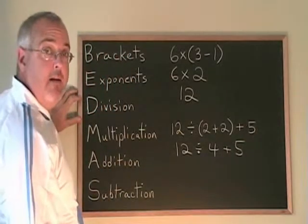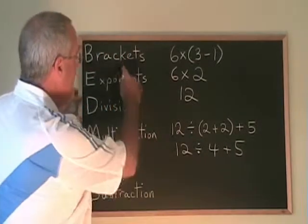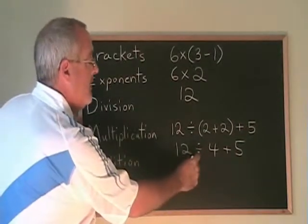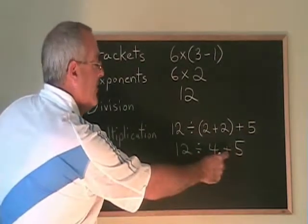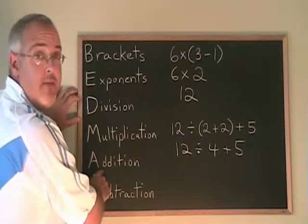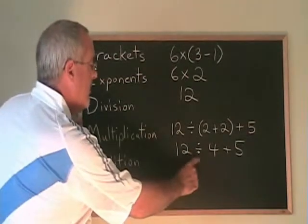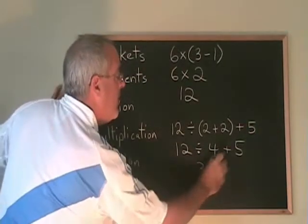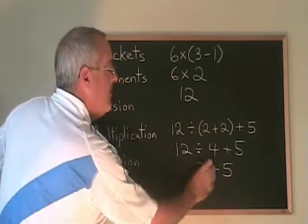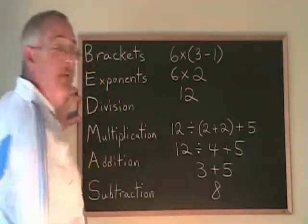Now, with no more brackets, we just have to apply the rest of the rules of BEDMAS. And we see divided by should be done before addition. 12 divided by 4 is 3. We copy down the plus 5. 3 plus 5 is 8, we're finished.